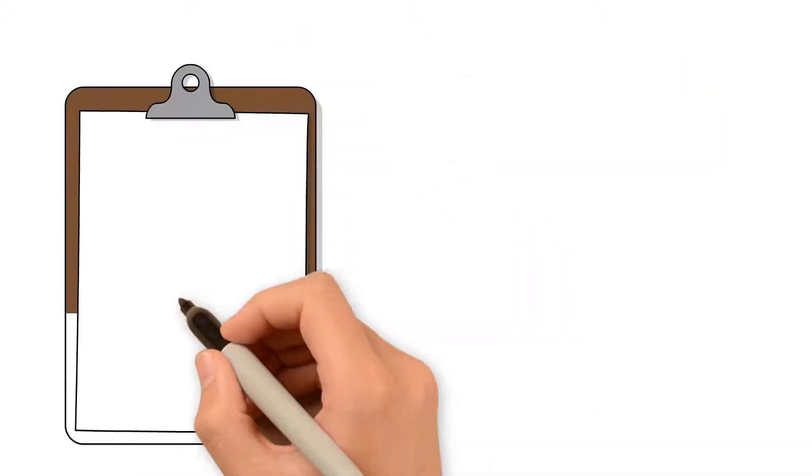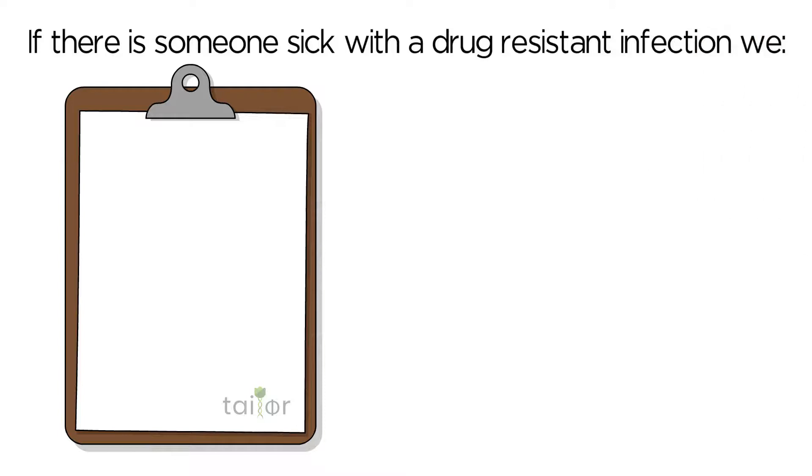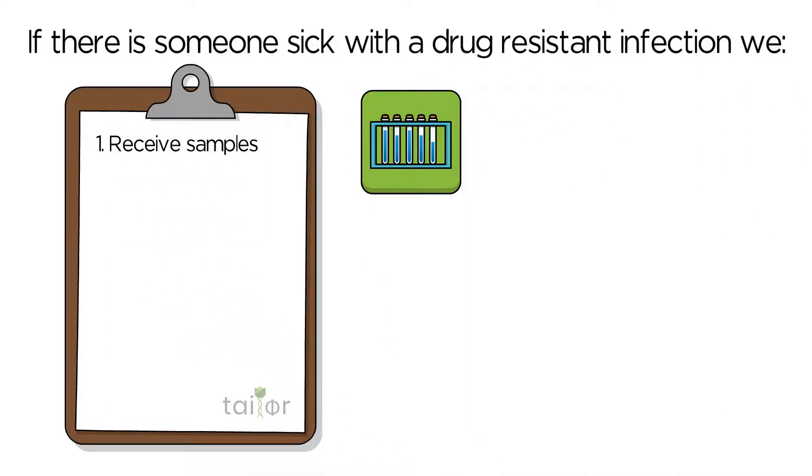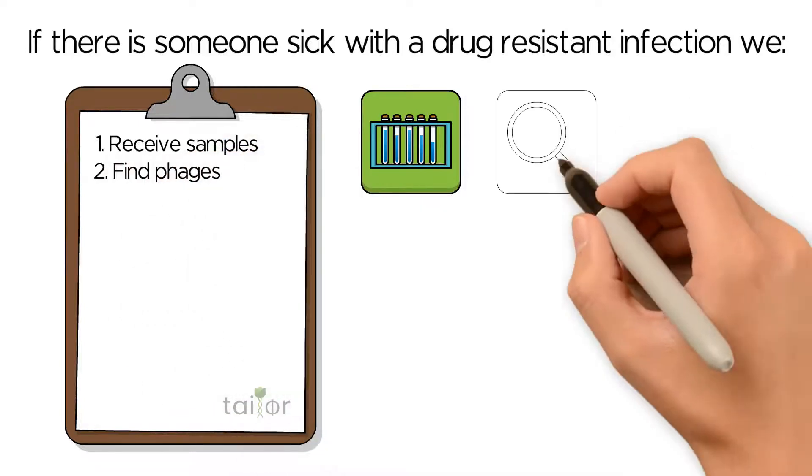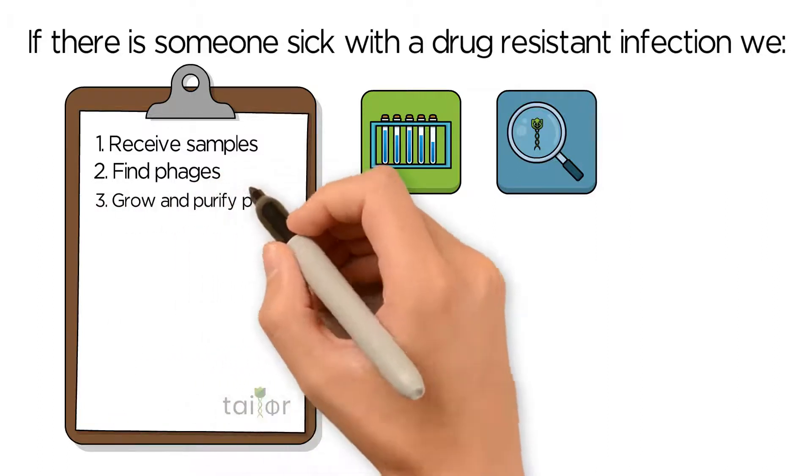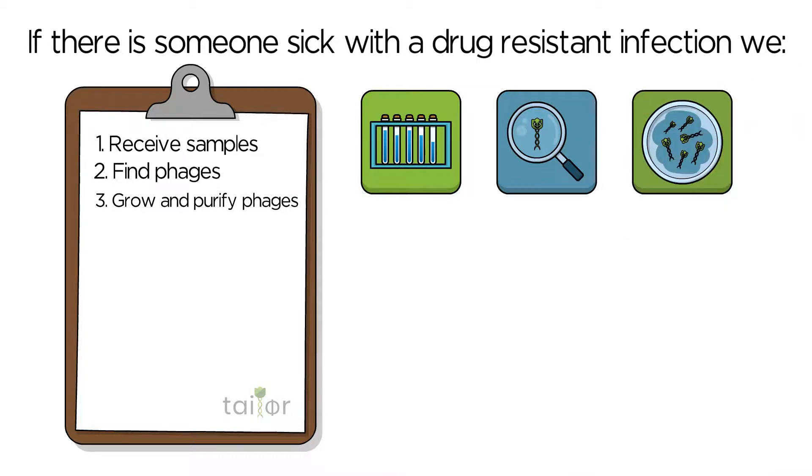Here at Taylor, if there is someone sick with a drug-resistant infection, we receive samples from the clinician of the bacteria or clinical sample. Find phages like Taylor from a variety of environmental sources that can kill bacteria from the patient sample. Grow the phages in the lab to have enough to treat and purify them of any bacterial or environmental contaminants.